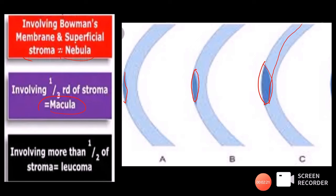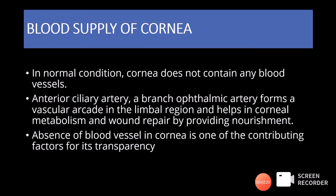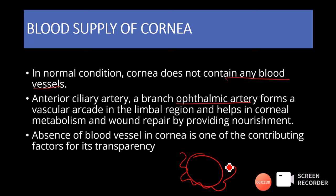Regarding blood supply: in normal conditions the cornea does not contain any blood vessels. The anterior ciliary artery, a branch of the ophthalmic artery, forms a vascular arcade in the limbal area, helping corneal metabolism and providing nourishment for wound repair. This absence of blood vessels in the cornea is one of the contributing factors for its transparency.